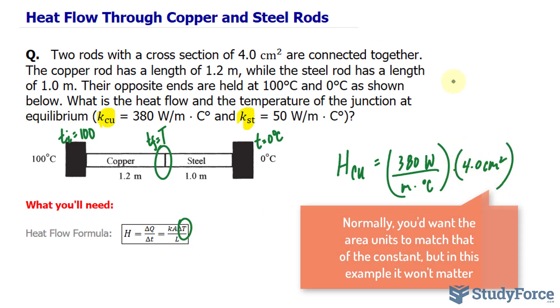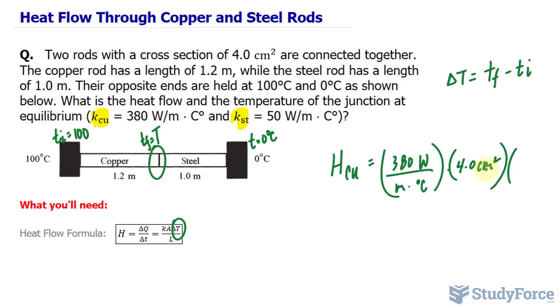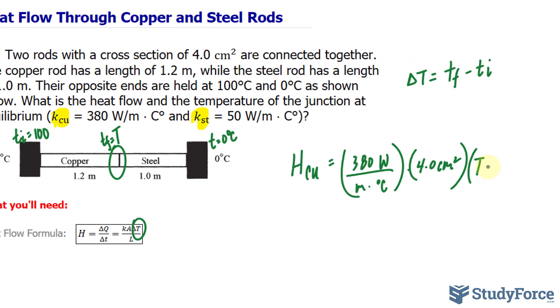Multiply by the change in temperature. The change in temperature is based off the final temperature minus the initial temperature. The final temperature is something we don't know, minus the initial being 100 degrees Celsius at this end, divided by the length of the copper, being 1.2 meters.